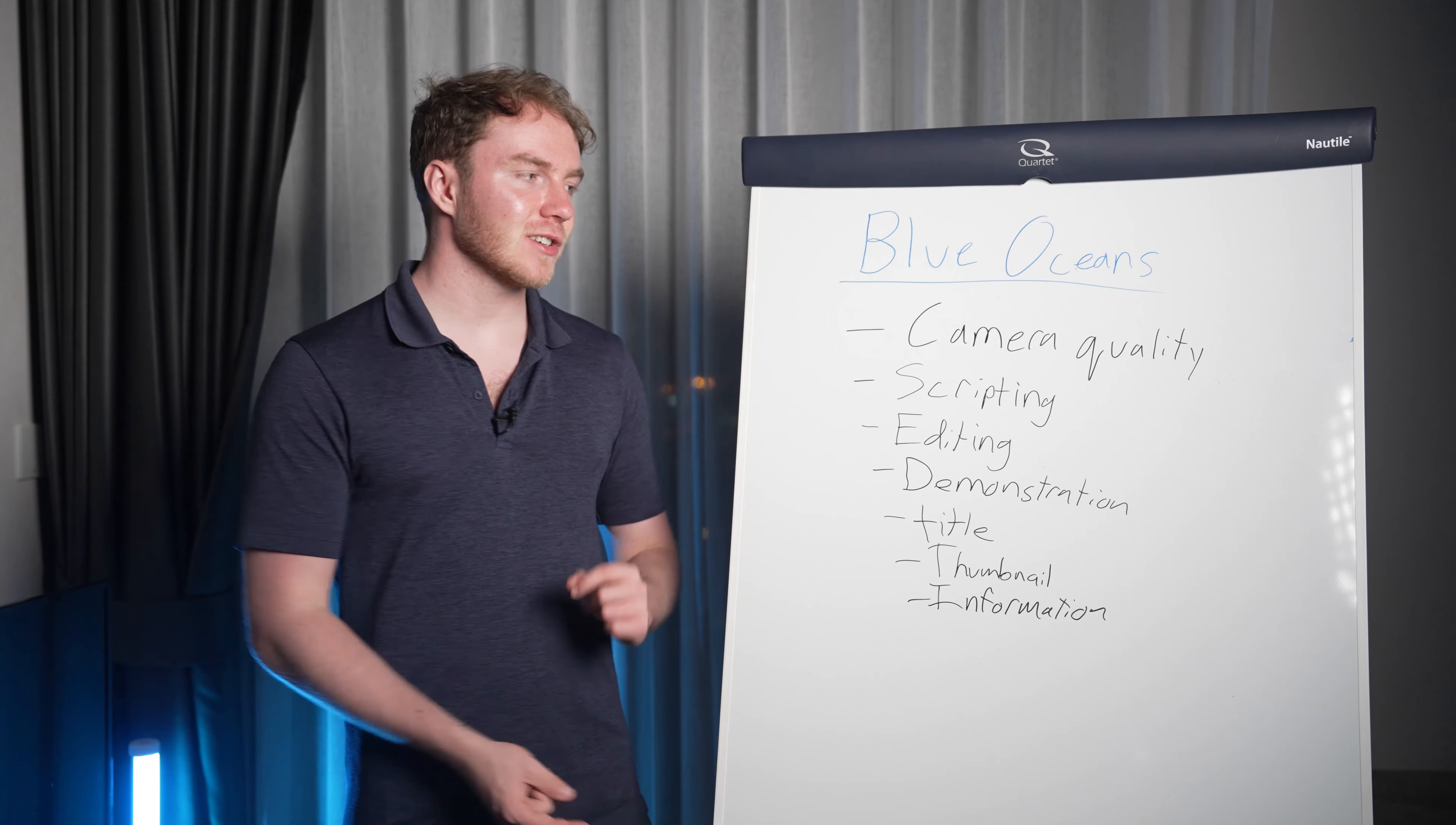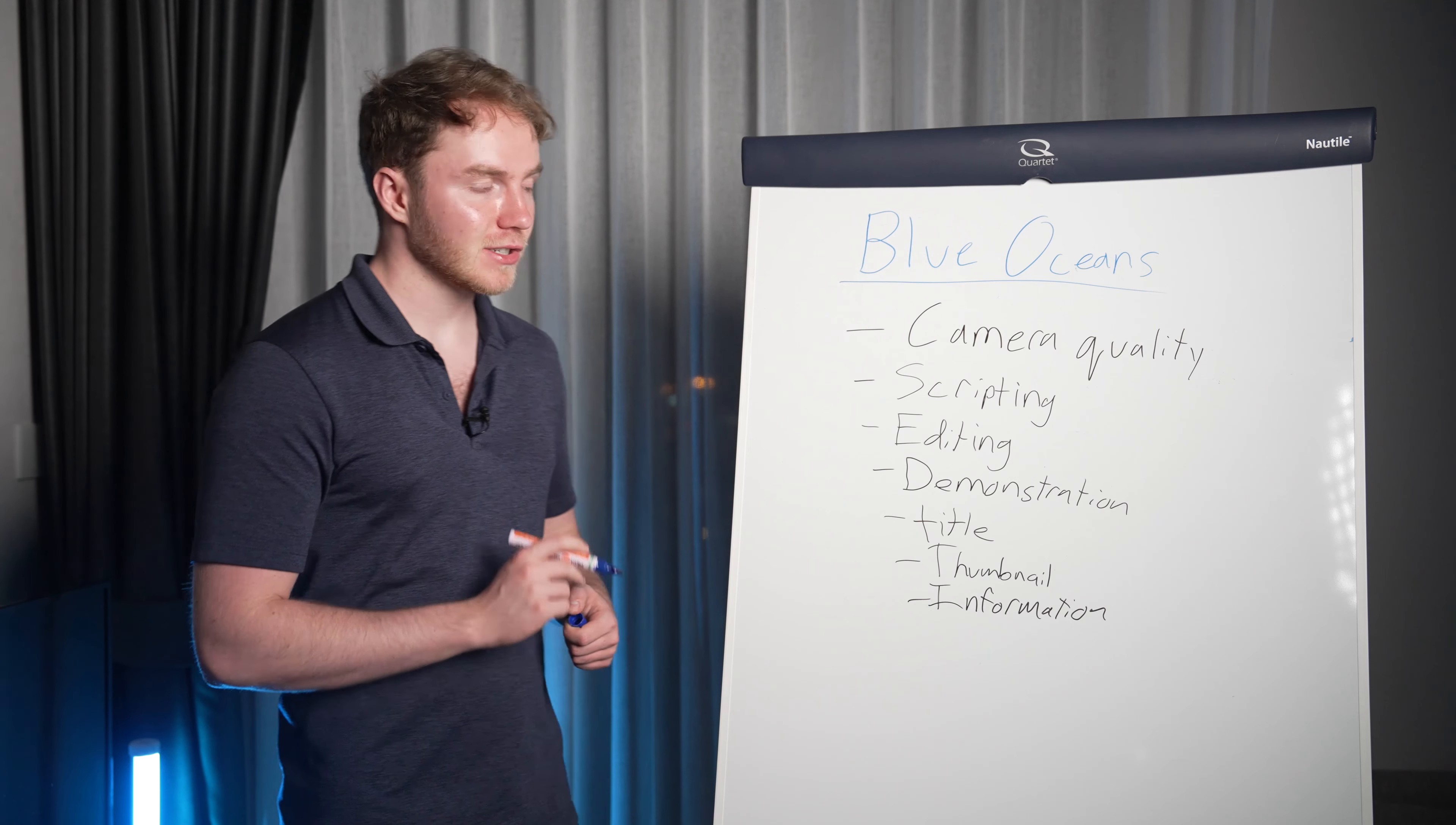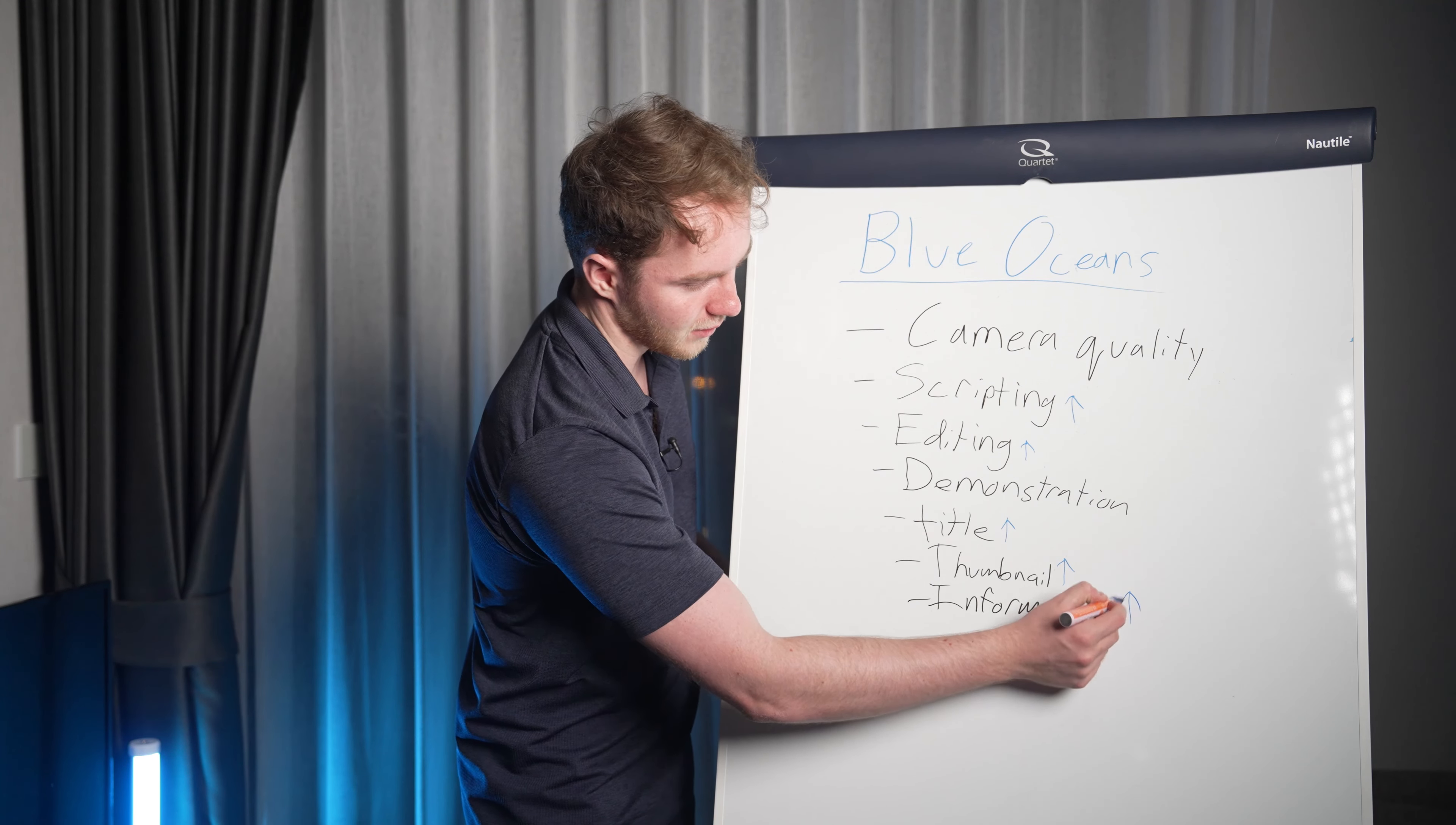Now that you have all of the factors about what goes into making a video in your niche, you need to categorize them. And what I mean by that is we're going to do four things. The first thing that we are going to do is raise the parts that we think are the most important. In my niche, YouTube growth, I think that the most important is title, thumbnail. So I'm going to raise that. And I also think that editing is very important, along with scripting. And also information, very important too.